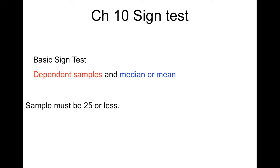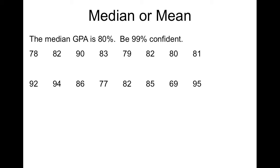Okay, so let's get right into the example. For the mean or median, the median GPA is 80%, be 99% confident. Now that is one list of data, just I couldn't fit it in one line, so we have one list of data, and there are all the scores for median values for other classes.